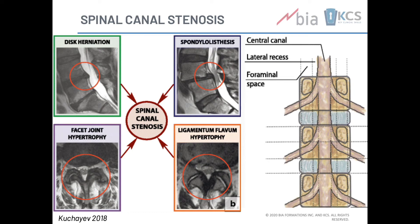At the end of the day, it's all these different factors coming together — disc herniation, spondylolisthesis, facet joint hypertrophy, ligamentum flavum hypertrophy — all coming together to result in central spinal canal stenosis.